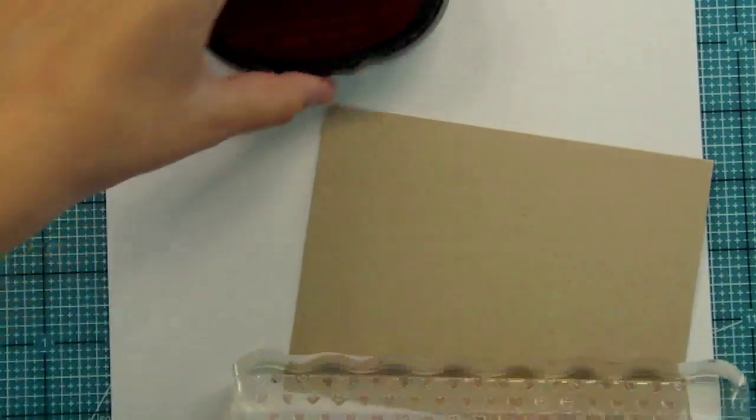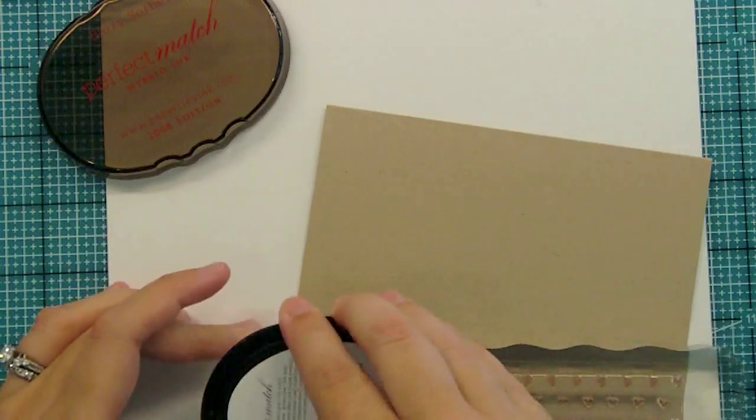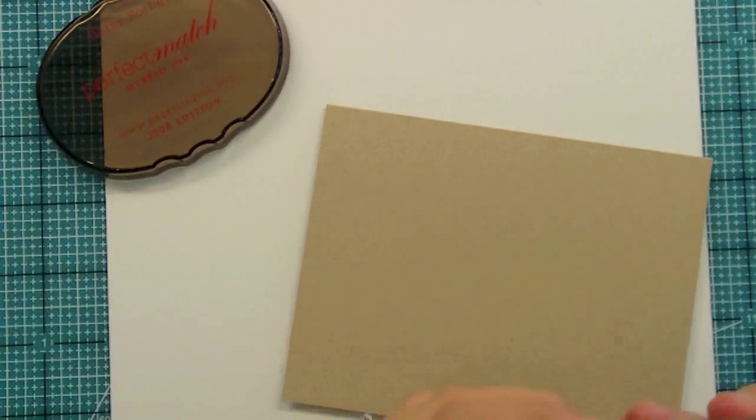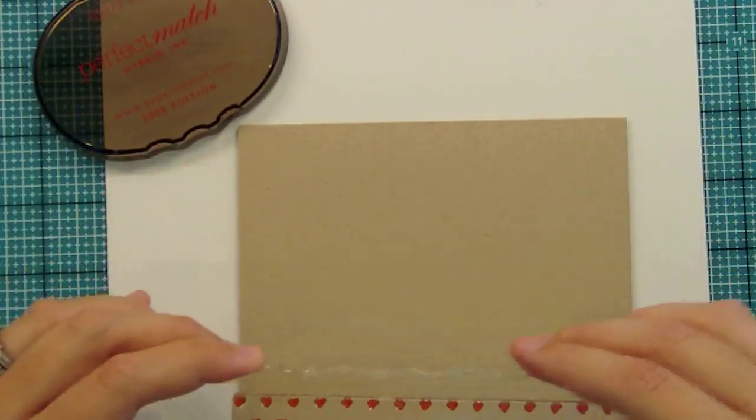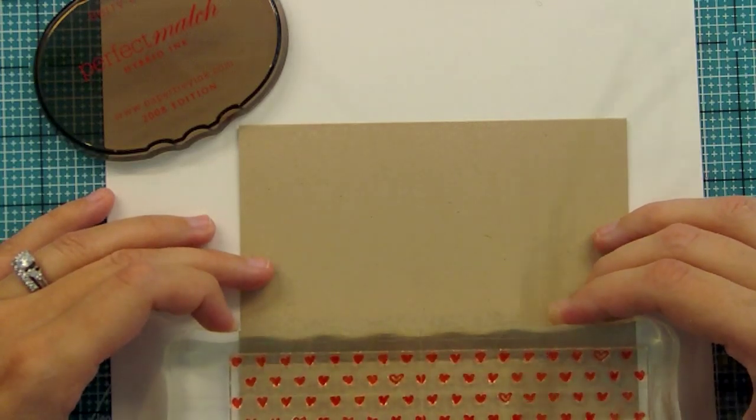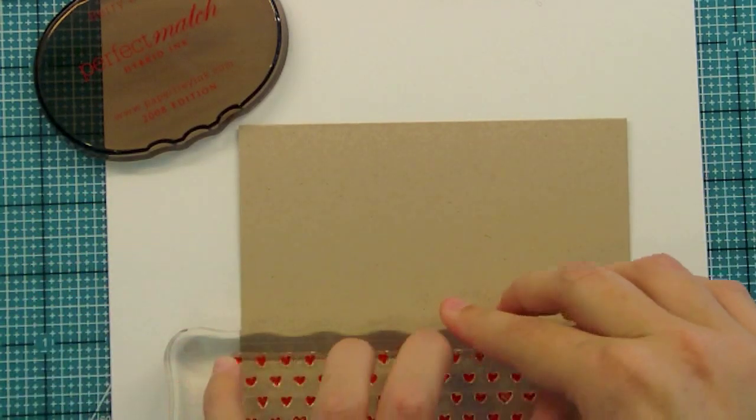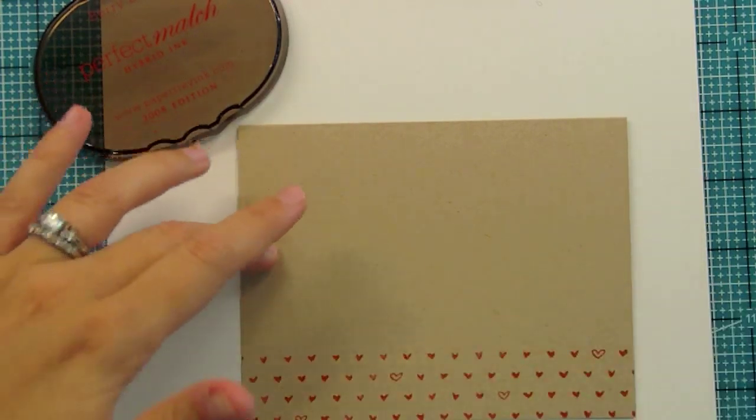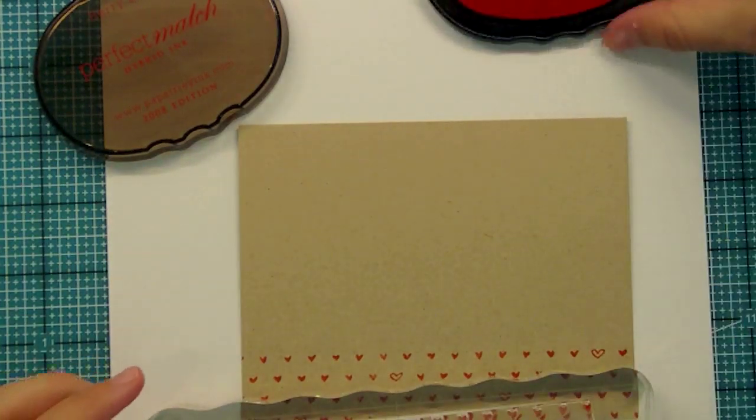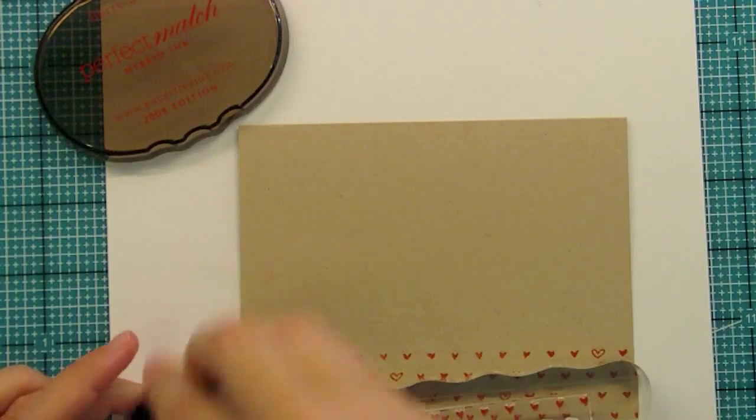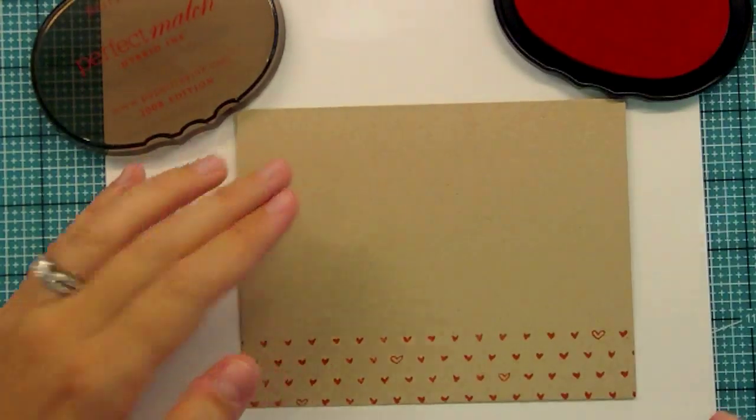I'm going to use Berry Sorbet ink by Paper Trink. I've got a scratch paper underneath because since this is long enough to cover the front of a card, you're going to stamp on the outside. You want to have scratch paper to catch your extra ink so you don't ink your whole desk up.